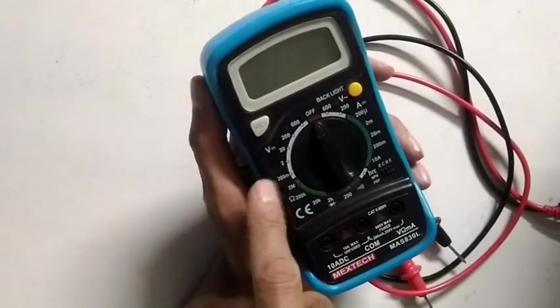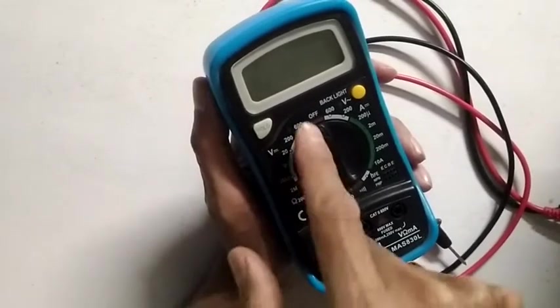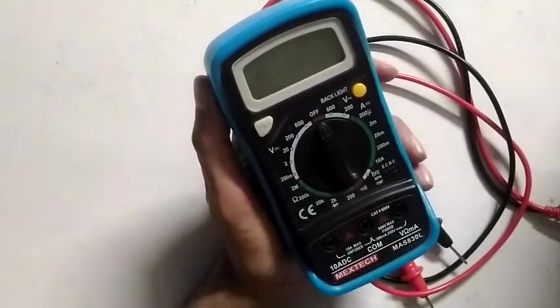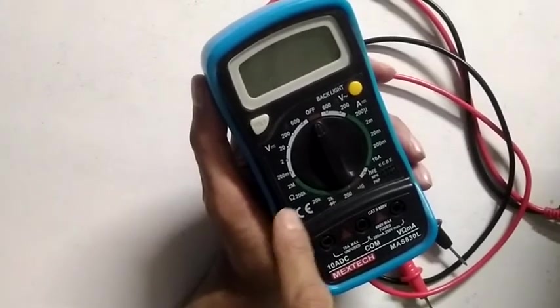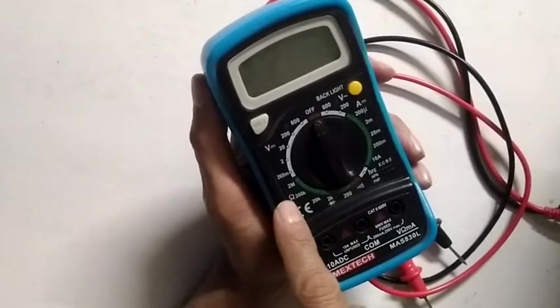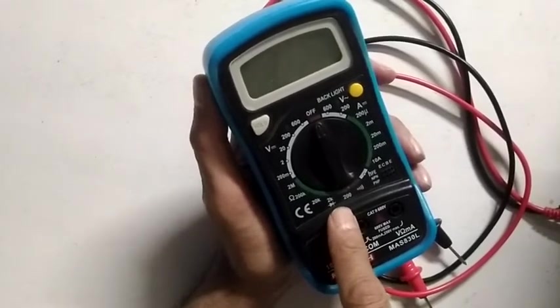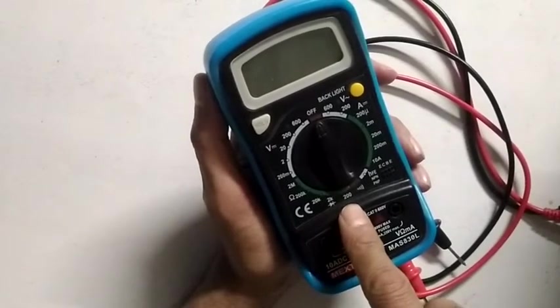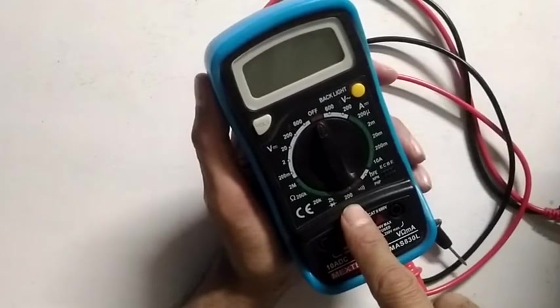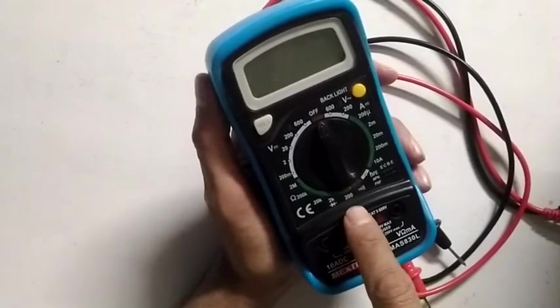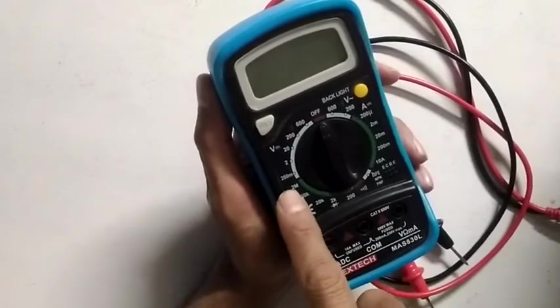You can measure resistance with this particular multimeter. The lowest one for very fine measurement is 200 ohms and the maximum you can measure is 2 mega ohms.